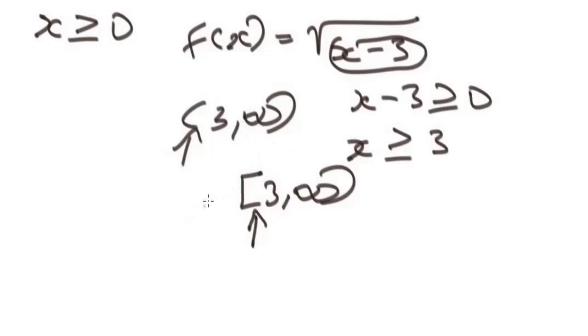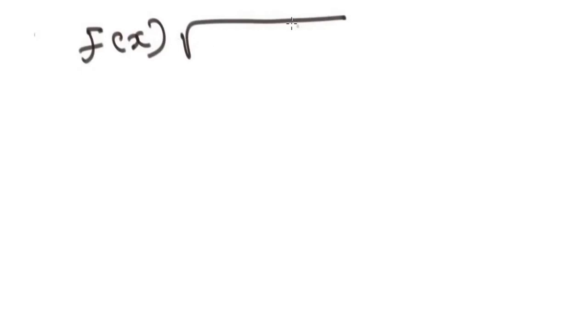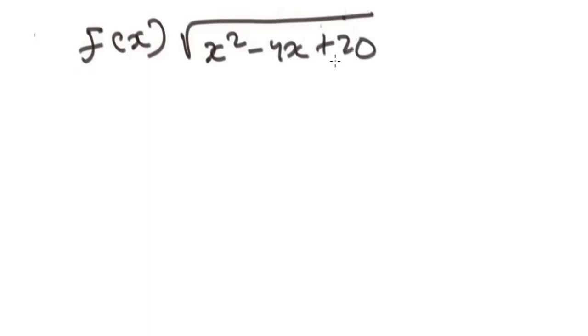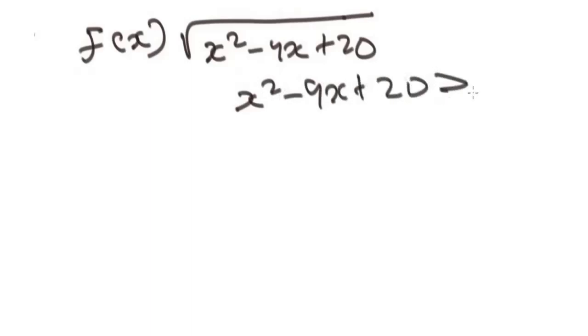Let's look at one more example. Say we are given f of x equals the square root of x squared minus 9x plus 20. Setting the expression greater than or equal to zero, we factorize to get the factors.